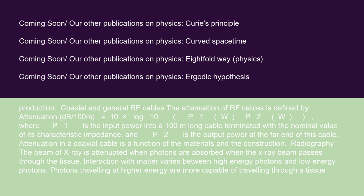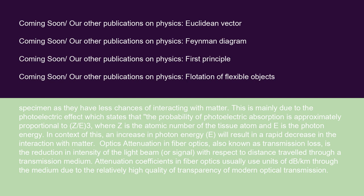In radiography, the X-ray beam is attenuated when photons are absorbed as the beam passes through tissue. Interaction with matter varies between high-energy and low-energy photons; photons traveling at higher energy are more capable of passing through a tissue specimen as they have less chance of interacting with matter. This is mainly due to the photoelectric effect, which states that the probability of photoelectric absorption is approximately proportional to Z³/E³, where Z is the atomic number of the tissue atom and E is the photon energy. An increase in photon energy E will result in a rapid decrease in interaction with matter.